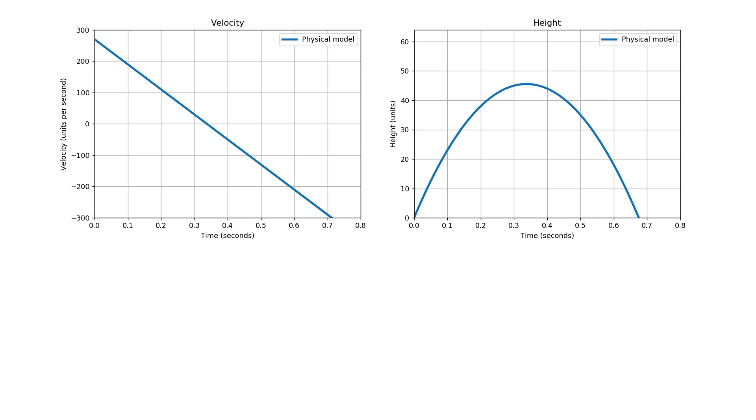Another way of thinking about this is in terms of the velocity as shown on the left hand side. As you can see the velocity starts at 270 units per second, the jump velocity in Quake 3, and then decreases at a constant rate. This rate corresponds with the acceleration due to gravity, 800 units per second per second. Note that the area under the velocity curve produces the height curve.